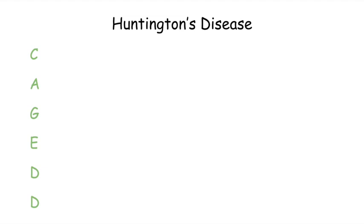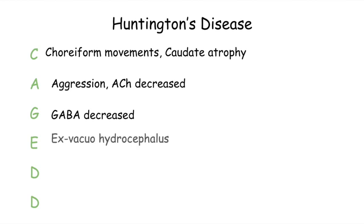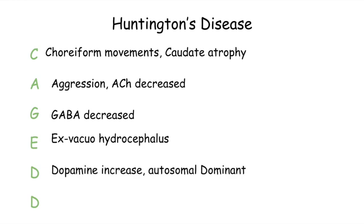There are some other high yield clinical findings we must know, and we can remember these with the mnemonic CAGED with two D's: C for choreiform movements and caudate atrophy, A for aggression, G for GABA decreased, E for ex vacuo hydrocephalus, the first D for dopamine increase and autosomal dominant, and the last D for dementia and depression. These patients can present with choreiform movements, aggression, dementia, depression, or even psychosis.